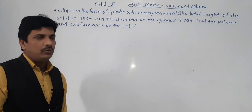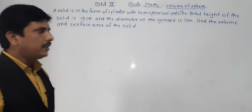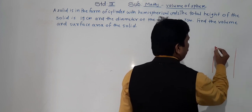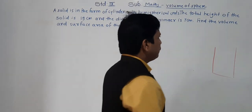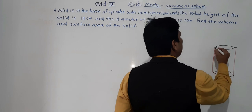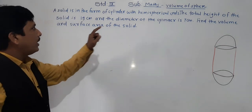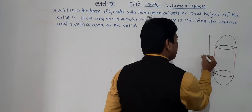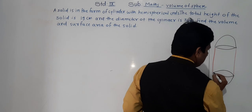Two things we need to find out. Given: a solid is in the form of a cylinder with hemispherical ends. We will see the figure — it is a cylinder with hemispherical ends on both sides. The total height of the solid is 19 cm, and the diameter of the cylinder is 7 cm.